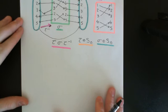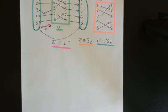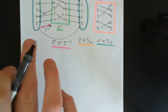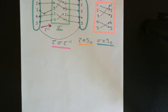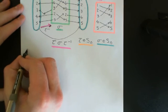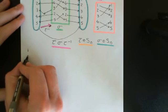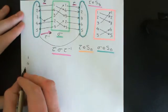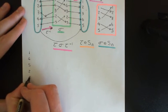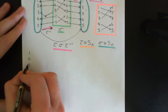Let's first answer the question: if we know the cycle decomposition of σ, do we know the cycle decomposition of τστ⁻¹, the conjugate of σ under τ? The best way to illustrate this is to do an example. So let's take our old favourite set permutation — I'll again write it in a nice form here. I've made a mistake in copying it out, so I'll replace this with a 3.